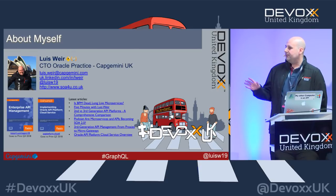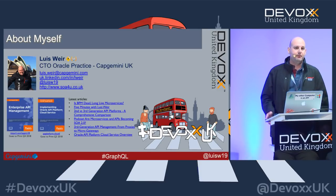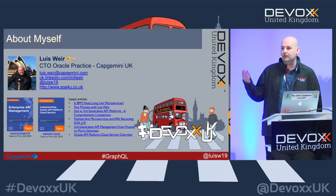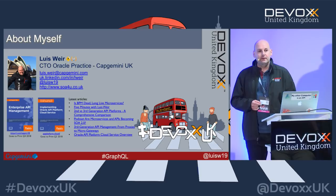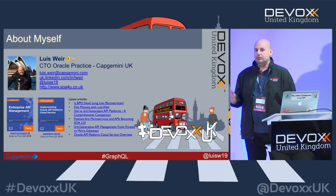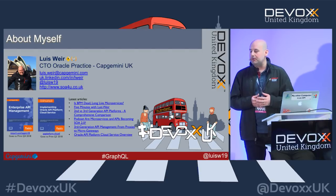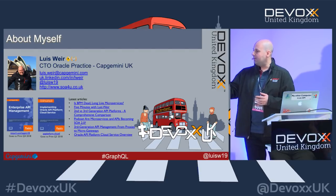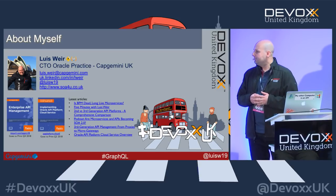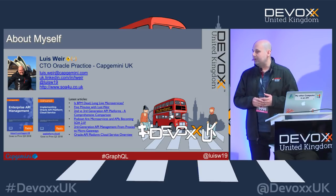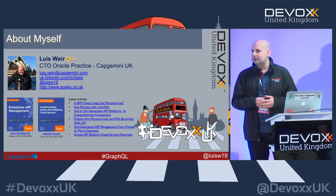Just very briefly introducing myself. My name is Luis Weir. As you can tell from my accent, I'm not from the UK, although I live here. I'm from Venezuela originally, but I've been here for about ten years. I'm the CTO for the Oracle practice of Capgemini UK, but also I'm an API junkie. I'm writing my fourth book on the topic of APIs and API management. I keep a blog and I've done a few talks at Java One and other conferences around the world.